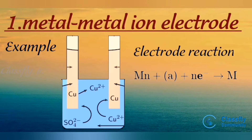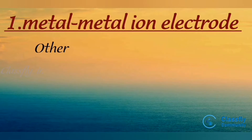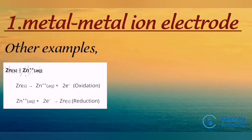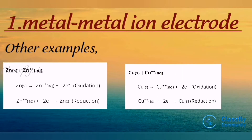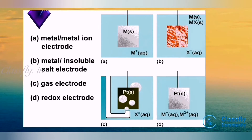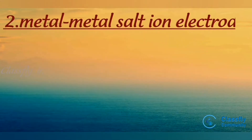The electrode reaction can be written as: M(n+) + ne⁻ → M. That means the metal ion gains electrons to form pure metal M. Other examples are: Zn(s) | Zn²⁺(aq) and Cu(s) | Cu²⁺(aq).